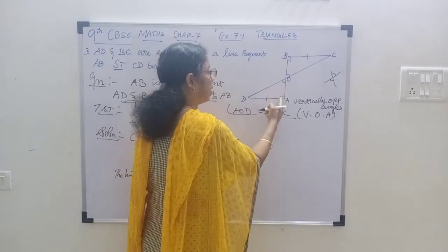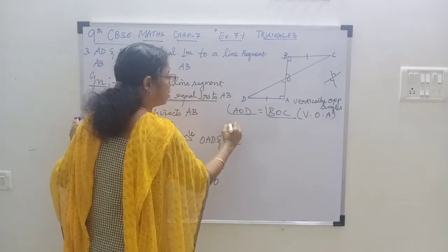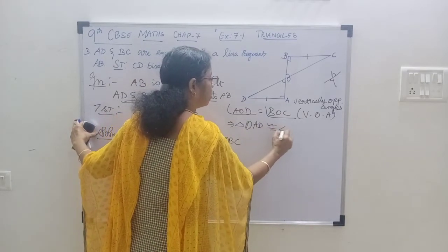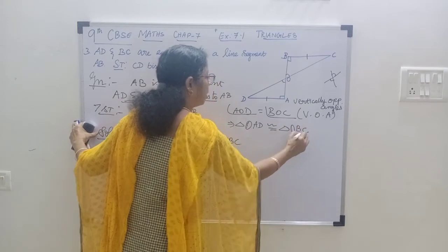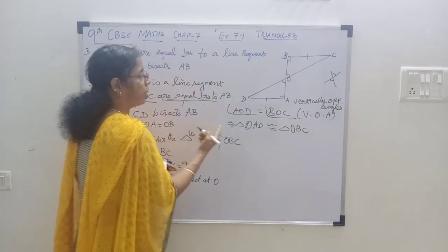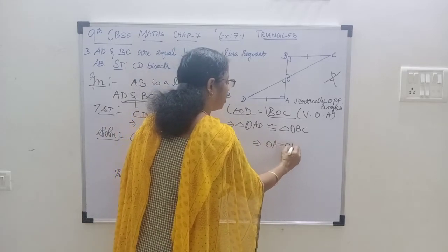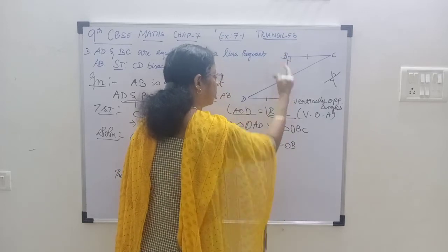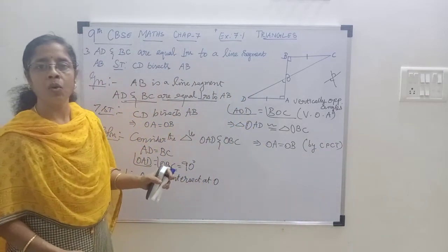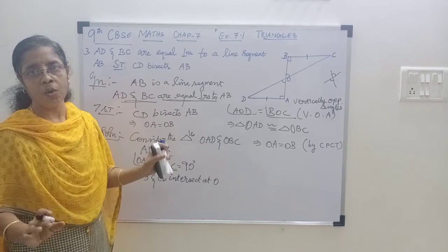These two angles are equal and these two sides are equal. So, this implies triangle OAD is congruent to triangle OBC. These two triangles are congruent. Then, you have to prove OA equal to OB. If these two triangles are congruent, then OA is equal to OB by CPCT — corresponding part of the congruent triangles.